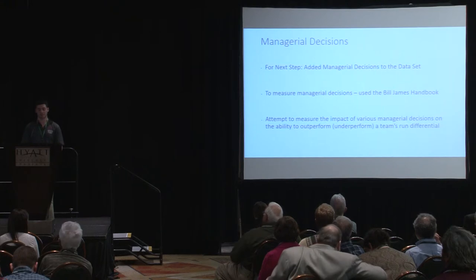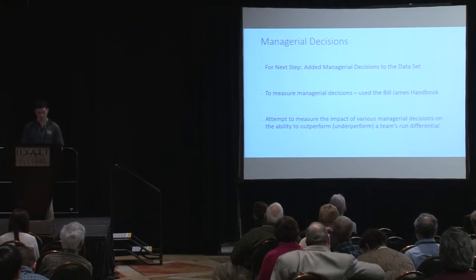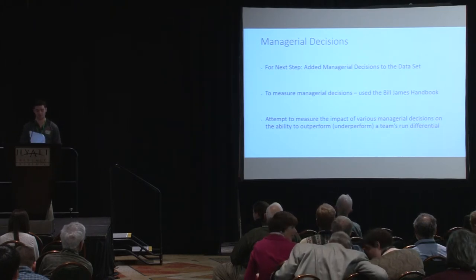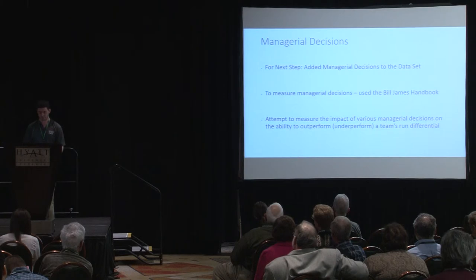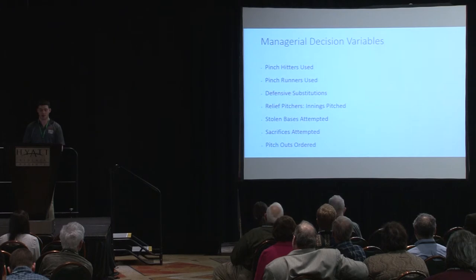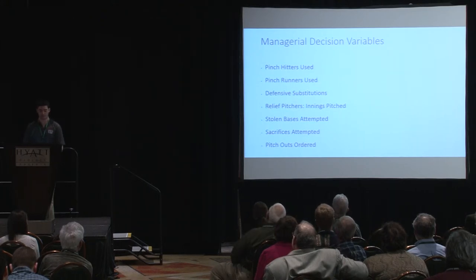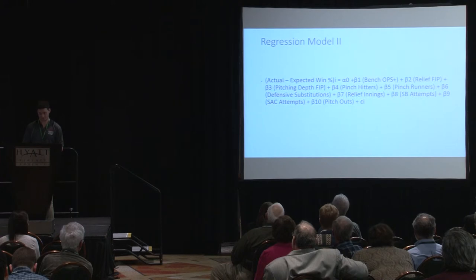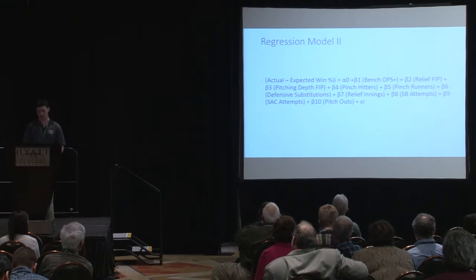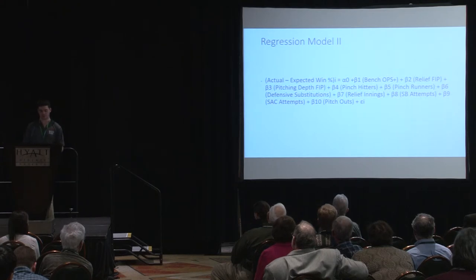Next, we add managerial decisions to our data set. To measure managerial decisions, we used the Bill James Handbook and attempted to measure the impact of various managerial decisions on the ability to outperform or underperform a team's run differential. The variables we used were pinch hitters used, pinch runners used, defensive substitutions, relief pitchers and their innings pitched, stolen bases attempted, sacrifices attempted, and pitch outs ordered. In our second regression, we added these managerial statistics while the dependent variable remains the actual minus expected win percentage.